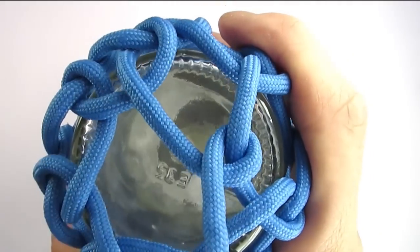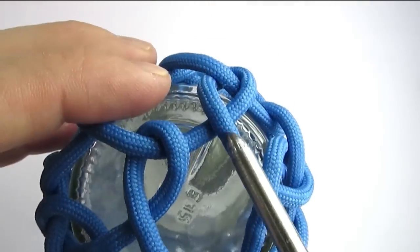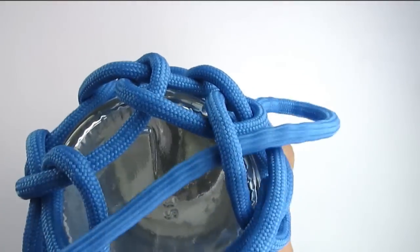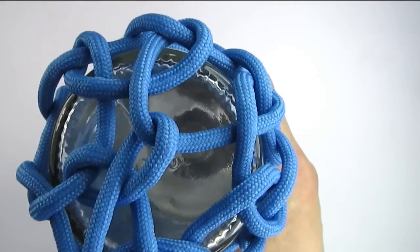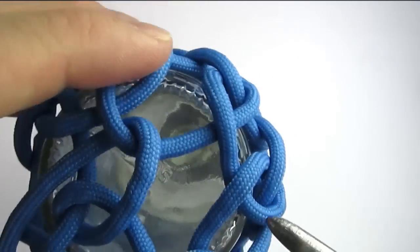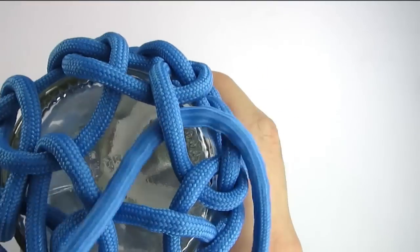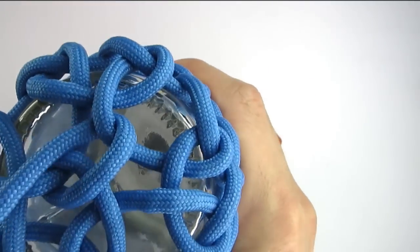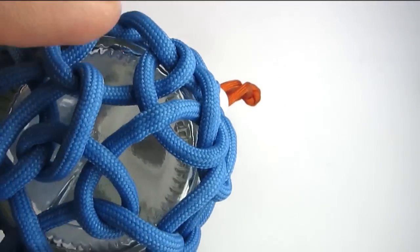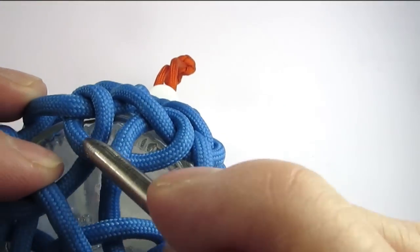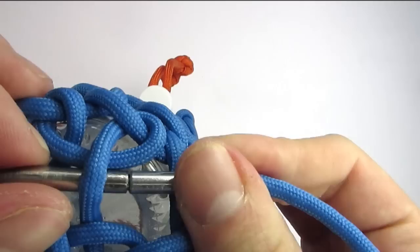This will quickly end our bottom, so it doesn't get too cluttered. Once we have reached the central point at the bottom, we're going to simply make another overhand knot which we use to begin our wrap.